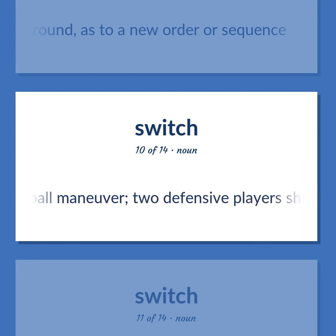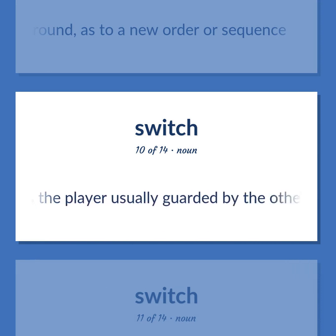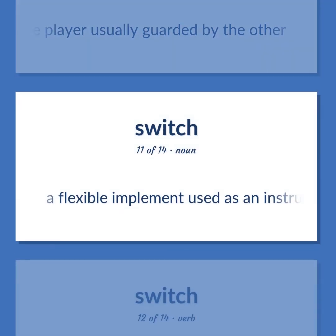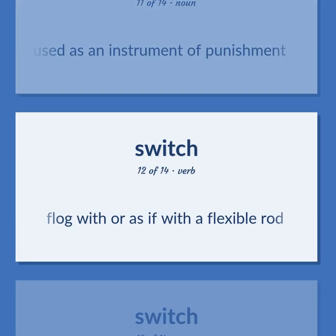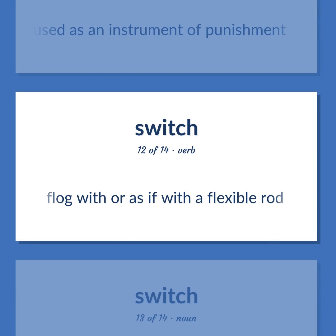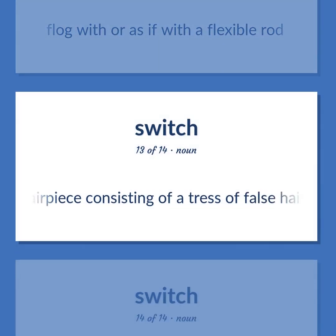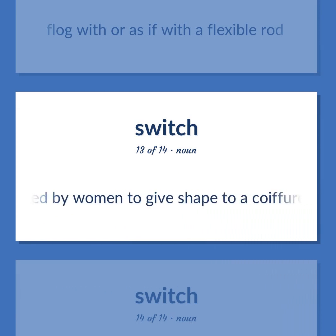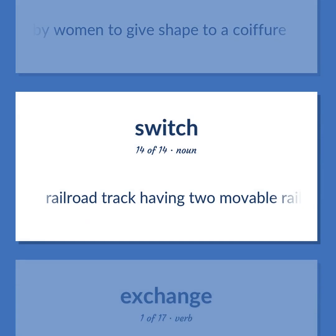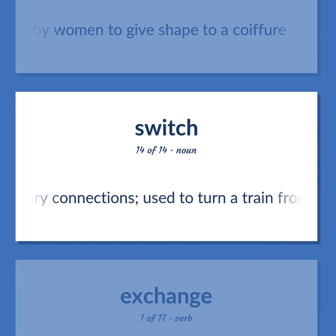Switch: a basketball maneuver where two defensive players shift assignments so that each guards the player usually guarded by the other. A flexible implement used as an instrument of punishment — flog with or as if with a flexible rod. A hairpiece consisting of a tress of false hair used by women to give shape to a coiffure. A railroad track having two movable rails used to turn a train from one track to another or to store rolling stock.